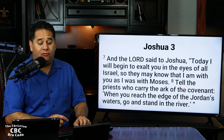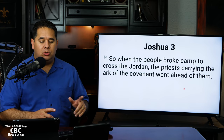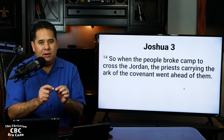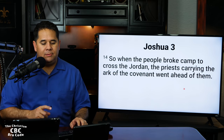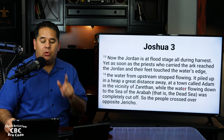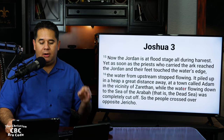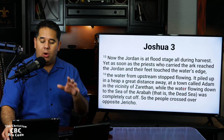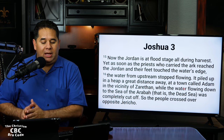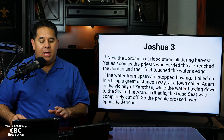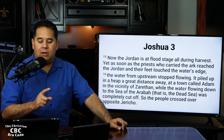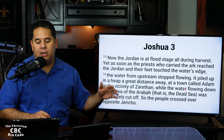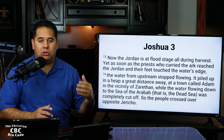Look at what happens next. We're going to jump down to verse 14. So when the people broke camp to cross the Jordan, the priests carrying the Ark of the Covenant went ahead of them. Now verse 15 has some important information. 'Now the Jordan is at flood stage all during harvest. Yet as soon as the priests who carried the Ark reached the Jordan and their feet touched the water's edge, the water from upstream stopped flowing. It piled up in a heap a great distance away at a town called Adam in the vicinity of Zarethan, while the water flowing down to the Sea of Arabah — that is the Dead Sea — was completely cut off, so the people crossed over opposite Jericho.'